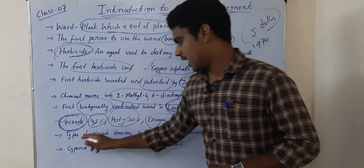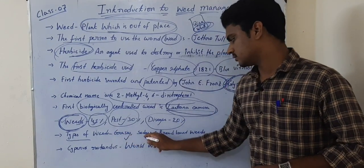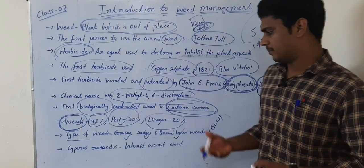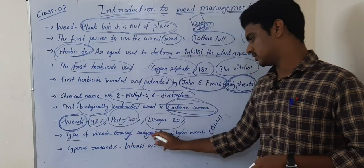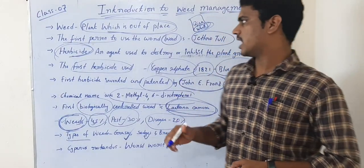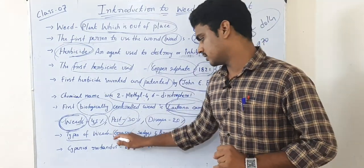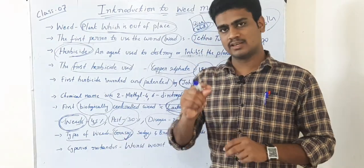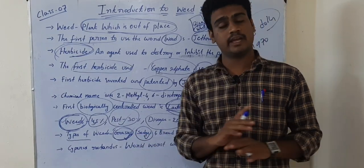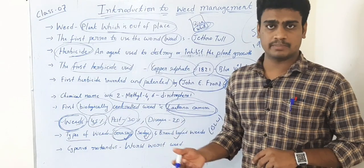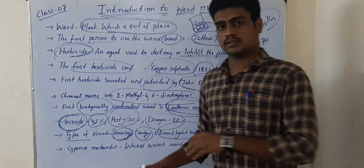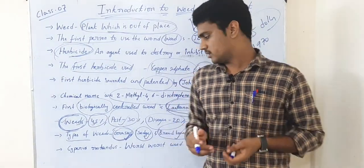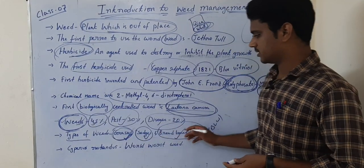The types of weeds are grasses, sedges, and broadleaved weeds — in short form, BLW. Based on their appearance or phenology, weeds are classified into these three types. Grasses are plants having nodes and internodes — for example, the rice plant also has nodes and internodes and is classified as a grass. Sedges do not have nodes or internodes — for example, Cyperus rotundus. Broadleaved weeds have widened leaves, such as Datura and Lantana camara.